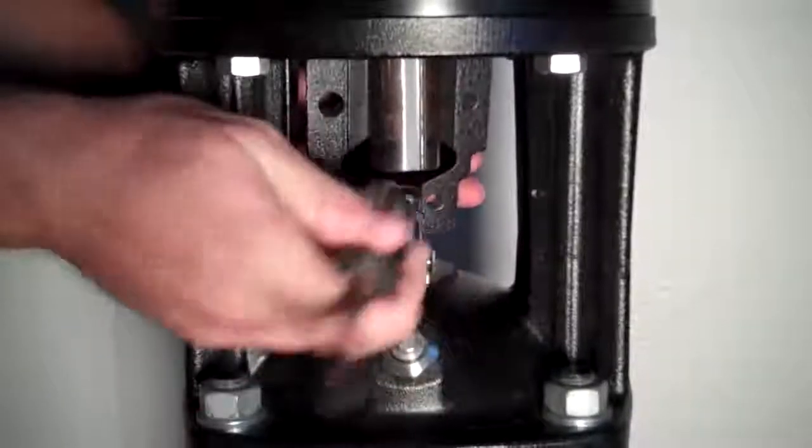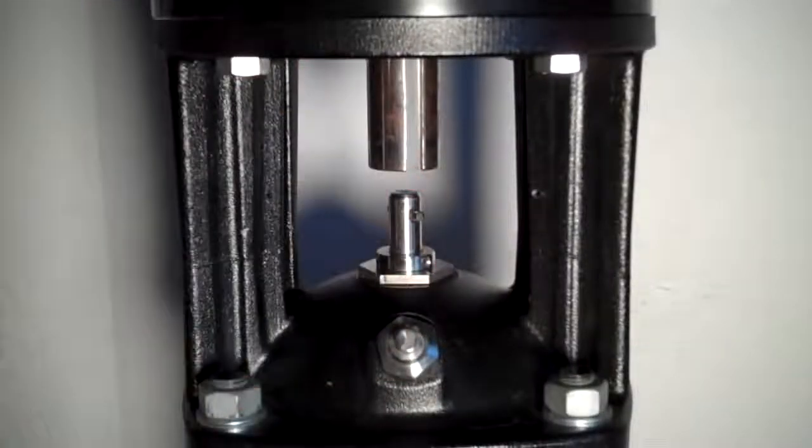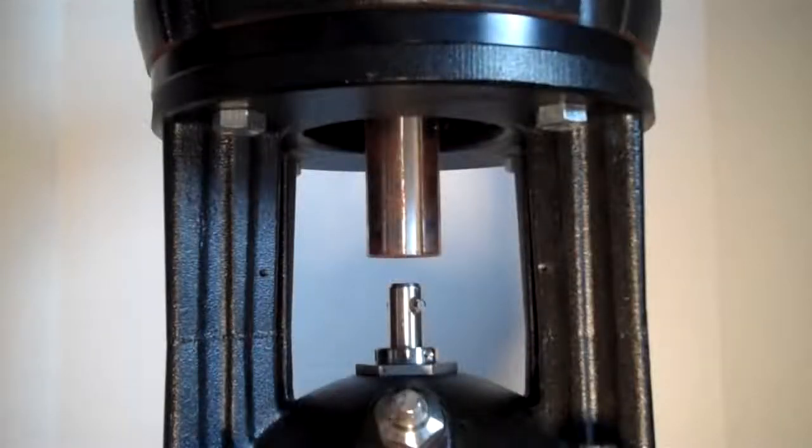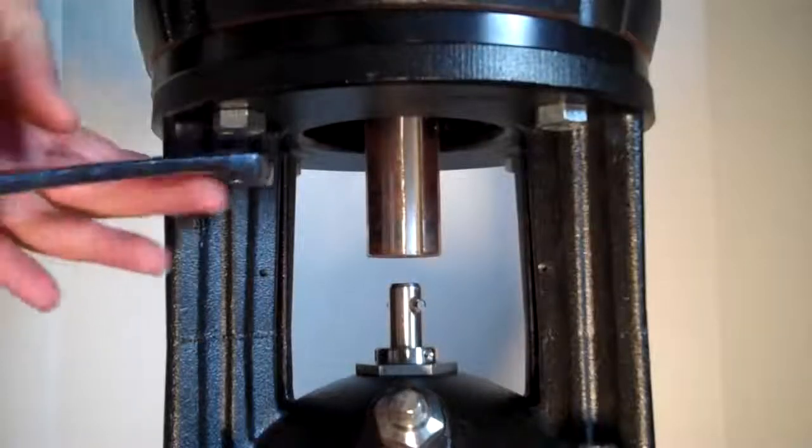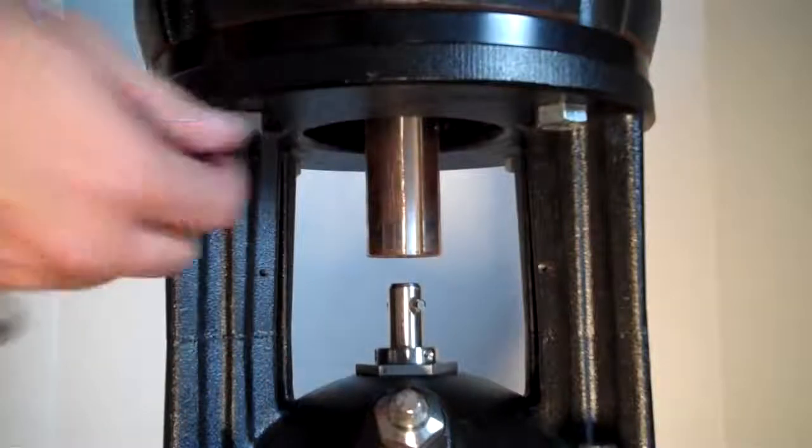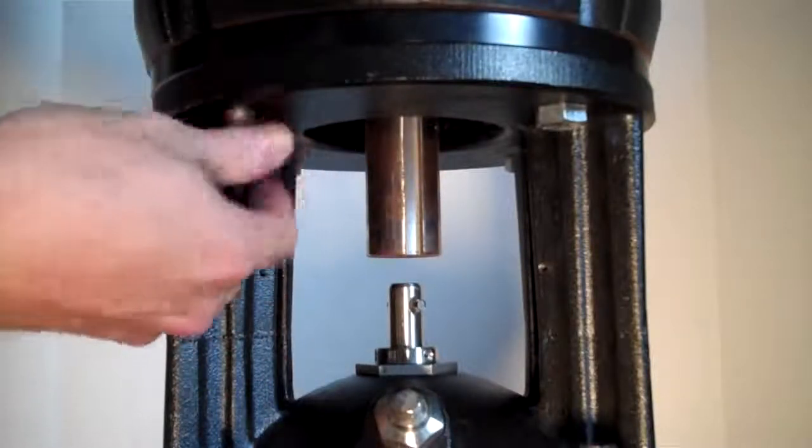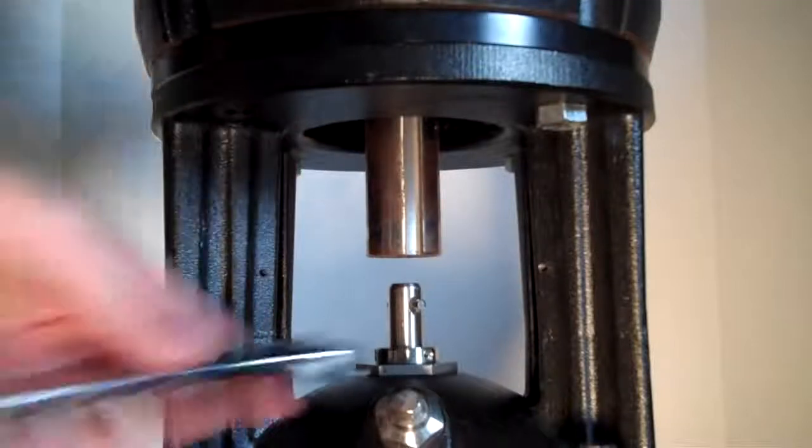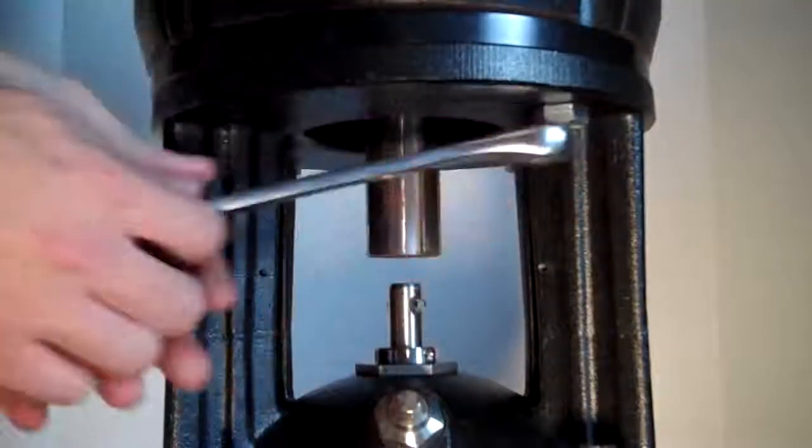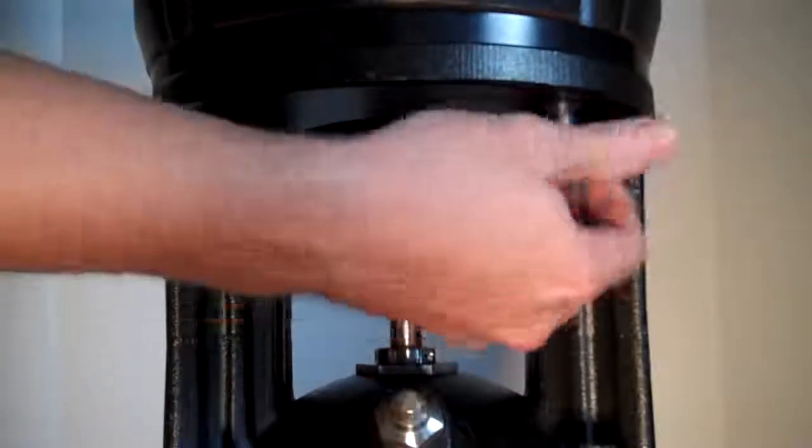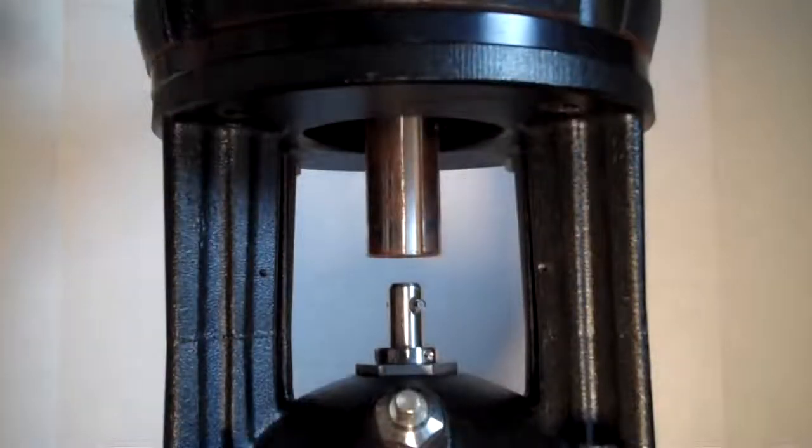Now that we've removed the coupling, the next step will be to remove the four motor bolts. There's two here and the other two on the other side.